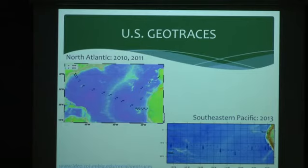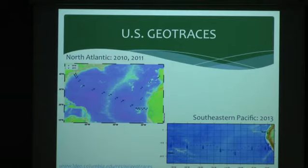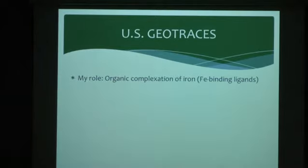In the North Atlantic we were doing 37-depth profiles, and I ended up with almost 600 samples from that program — about six times my total career number of samples cumulatively. The Pacific is sending me just over 900, so we're ramping up in resolution. I'm funded by GEOTRACES to look at the organic complexation of iron — iron-binding ligands — so not just iron, but iron speciation.